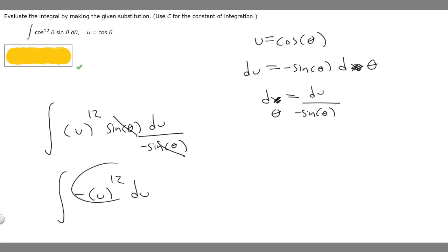So now we got it like this. What we're going to do is find the antiderivative of this function right here and then just replace u with cosine theta. So we have minus u to the 12. We're finding the antiderivative.